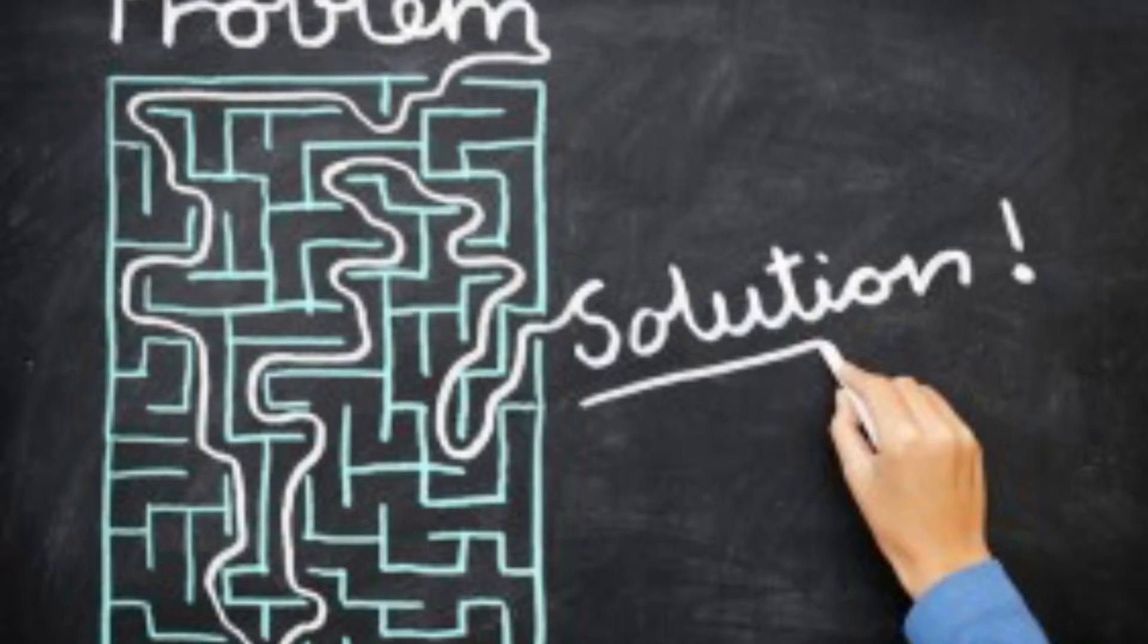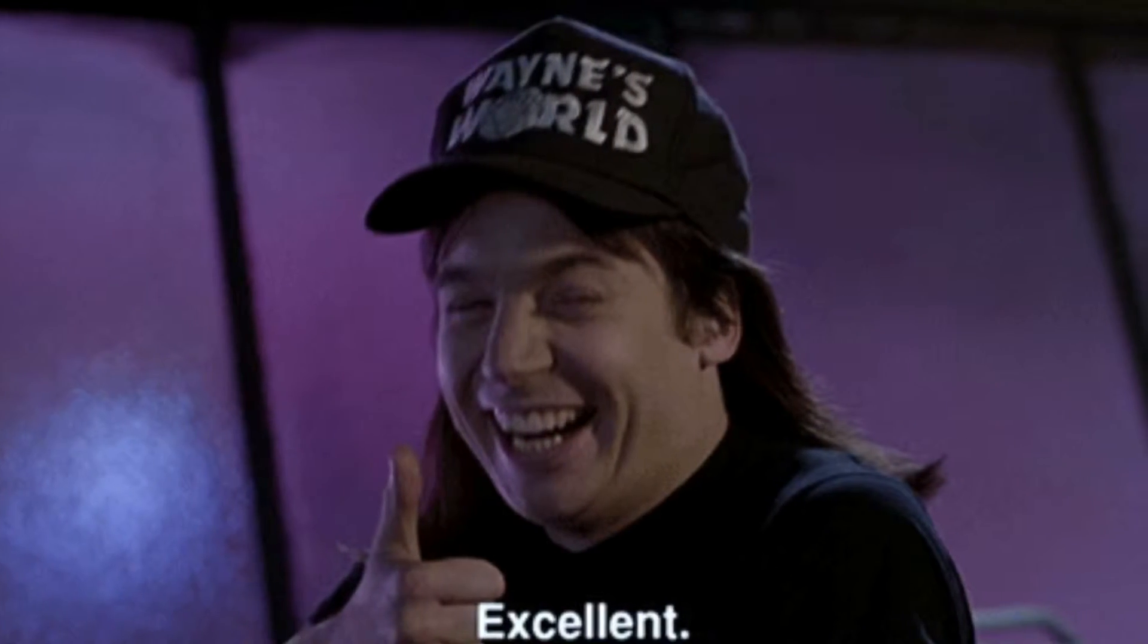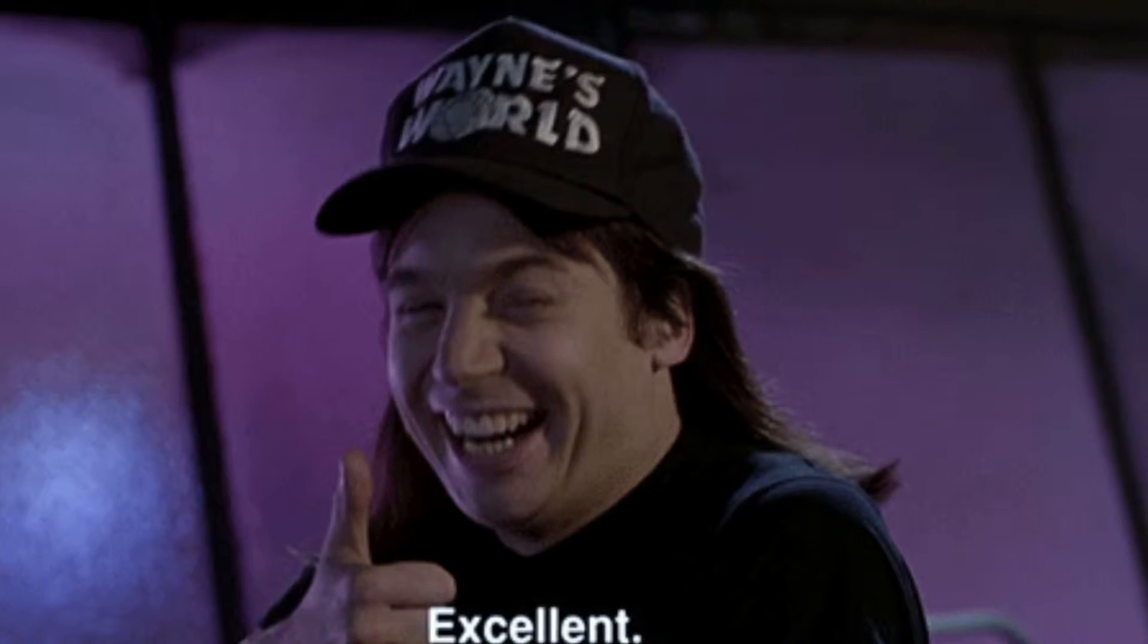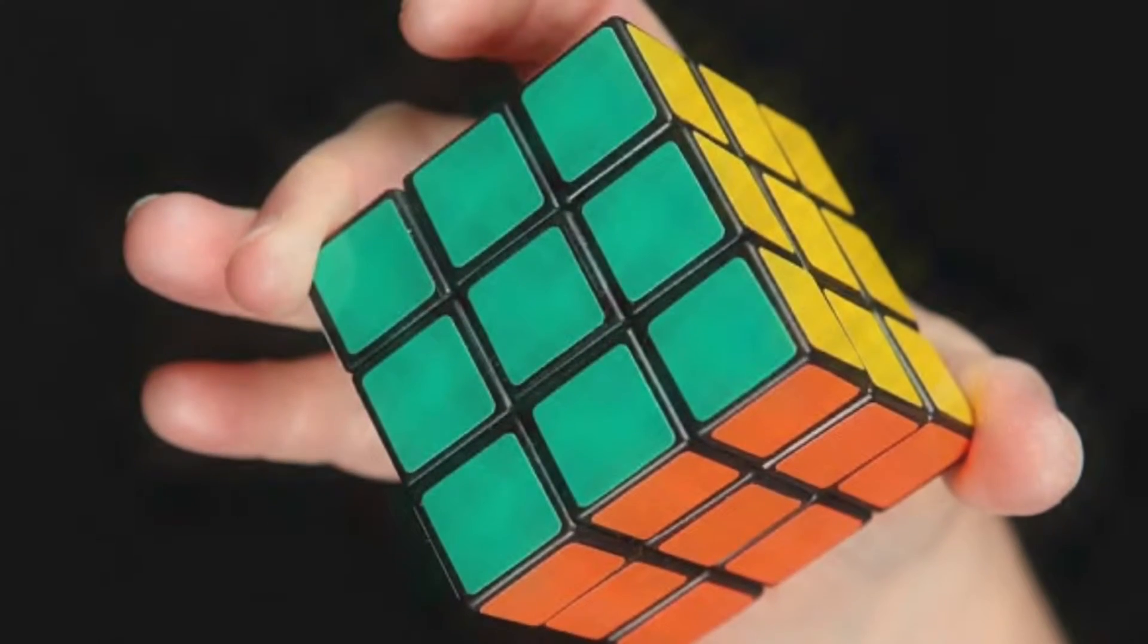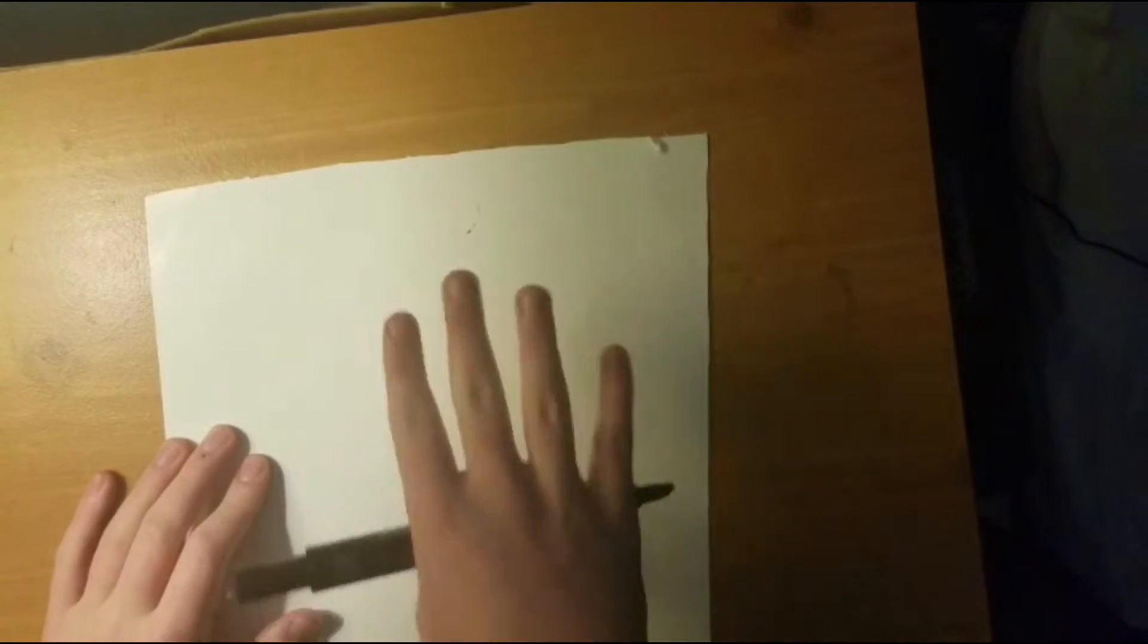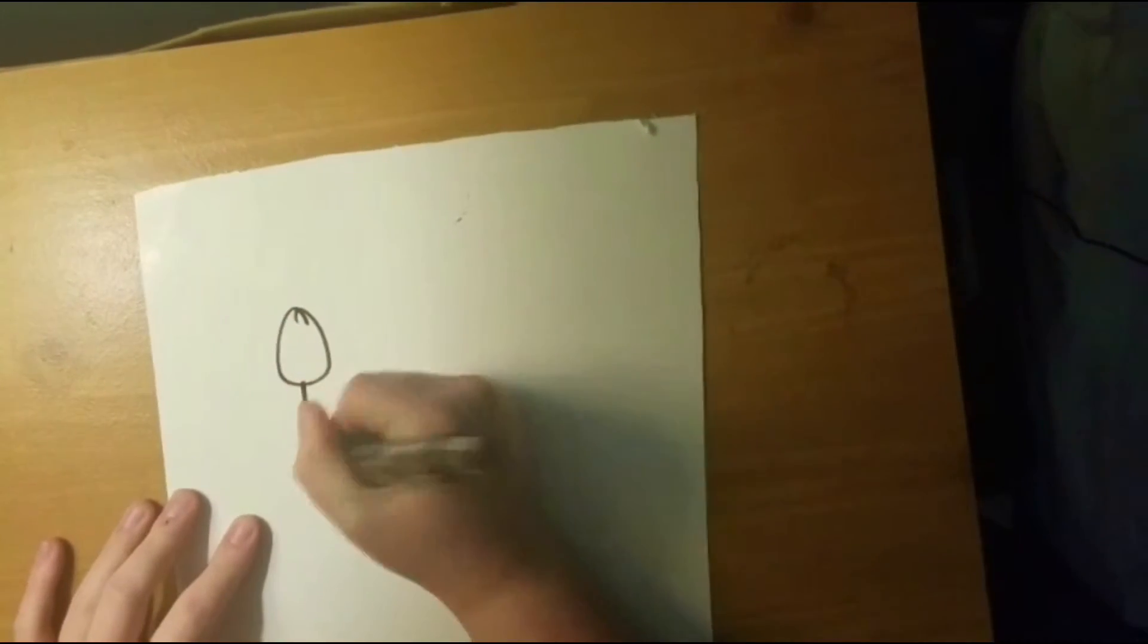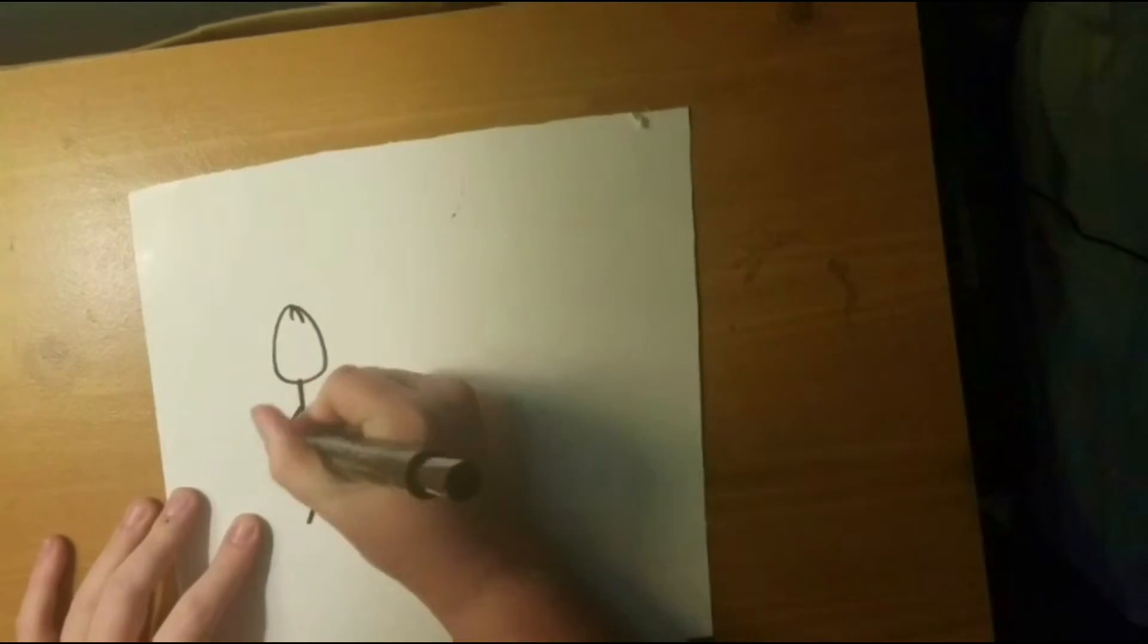So after solving some problems and finding the solutions you were looking for, you're probably feeling pretty good about yourself. But lastly, we're going to talk about obstacles that actually hinder our problem-solving. In problem-solving, we can often face two major difficulties when trying to accurately solve a problem. One of these being confirmation bias, and the other being fixation.